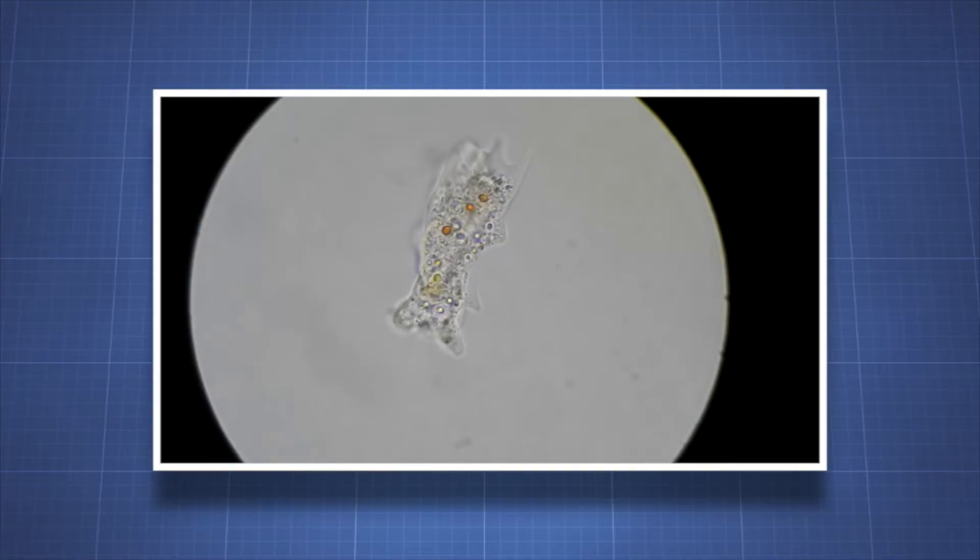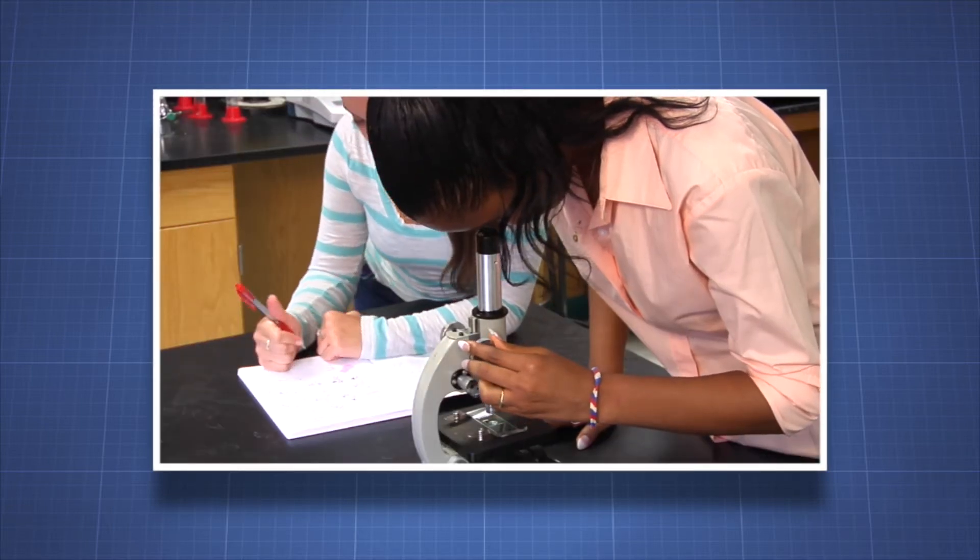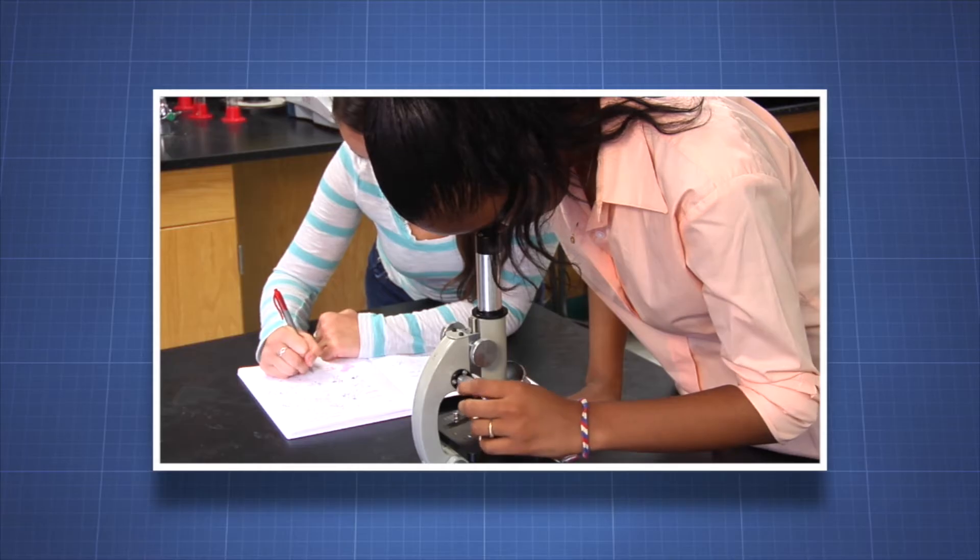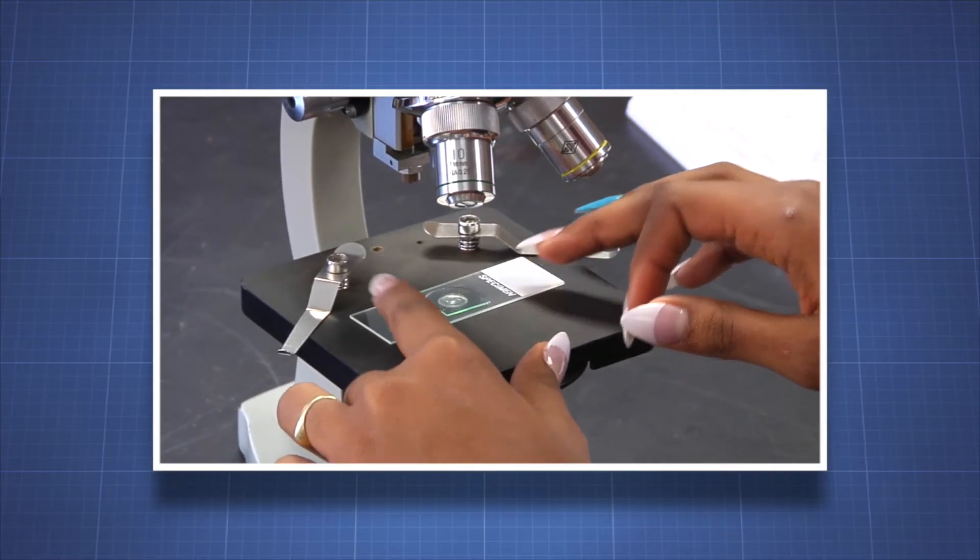Viewing tiny structures and microorganisms through a microscope gives a unique perspective on the world that is too small to see. When making scientific observations, your methods and observations must be clear to other scientists, so it is essential to prepare and observe a microscope slide correctly.